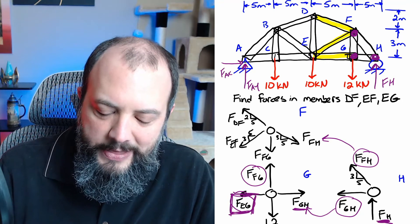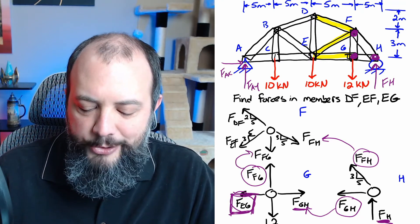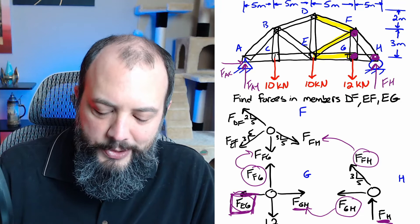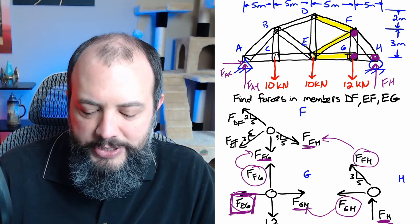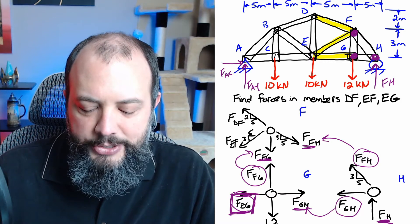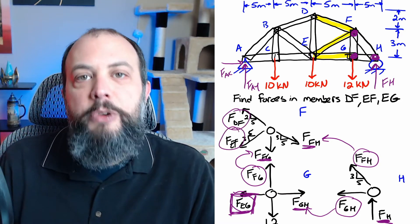Once you know that FFG you can then plug that into the free body diagram at F and then there would be two knowns and only two unknowns and that will let you then do a sum of forces in X and Y to solve for your last two unknowns which then would let you finish the problem.